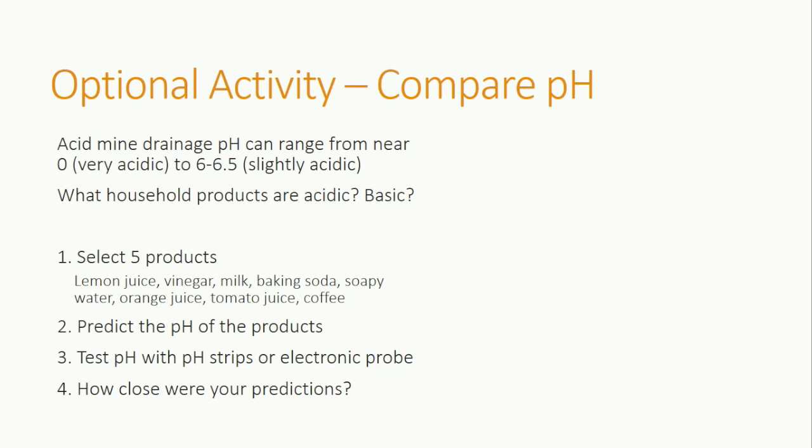You can pause the video here and complete a quick activity to compare the pH of familiar foods and household products to acid mine drainage. Some of the liquids you could use are lemon juice, vinegar, milk, baking soda dissolved in water, soapy water, orange juice, tomato juice, and coffee. Before measuring pH, predict the pH of each of the products.